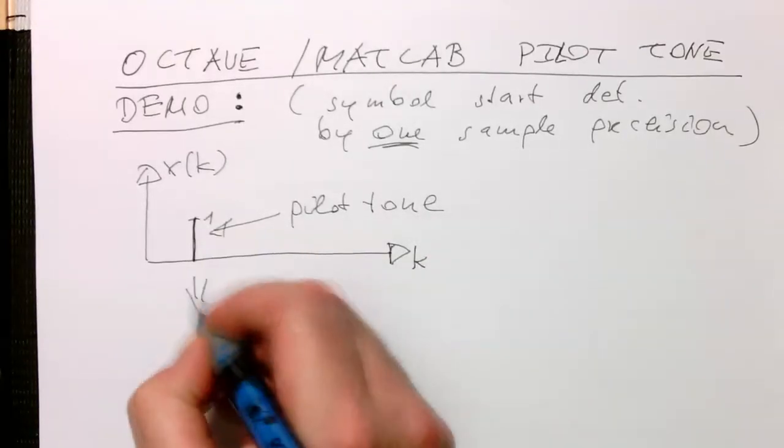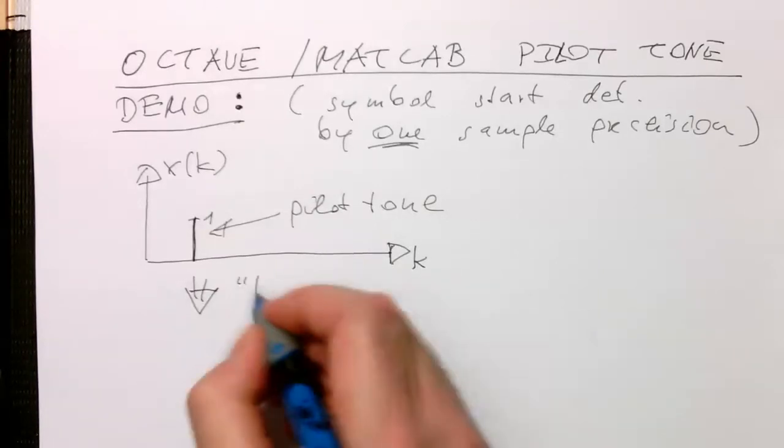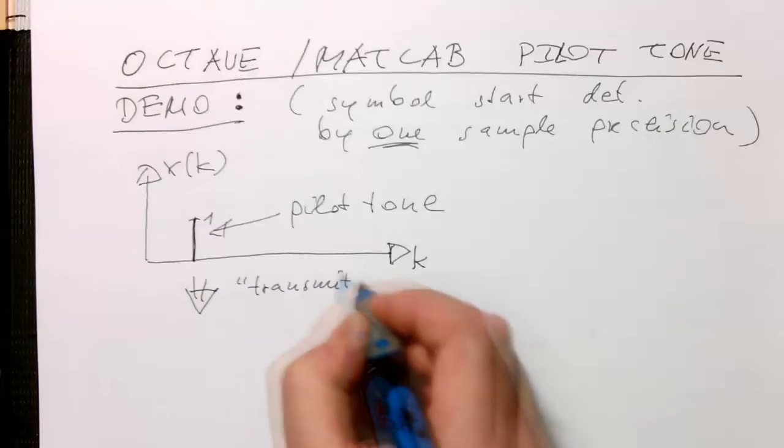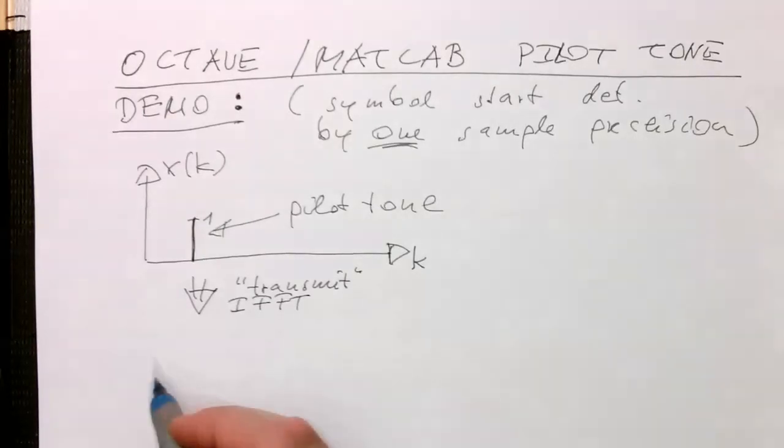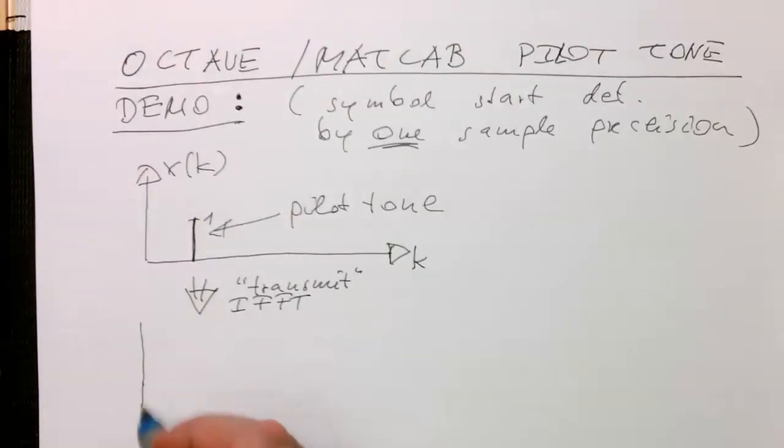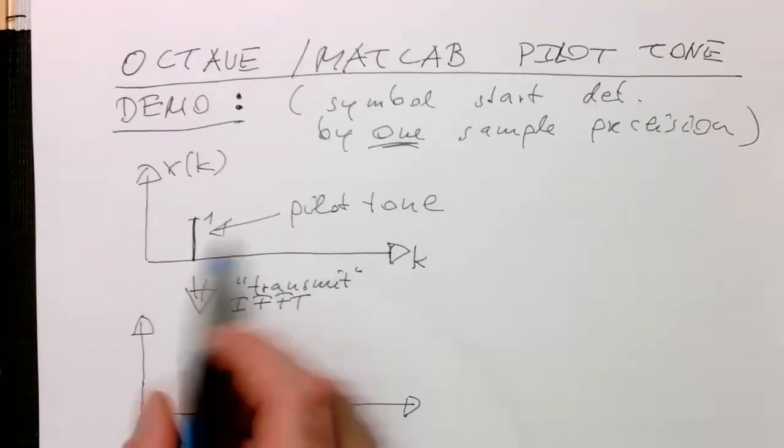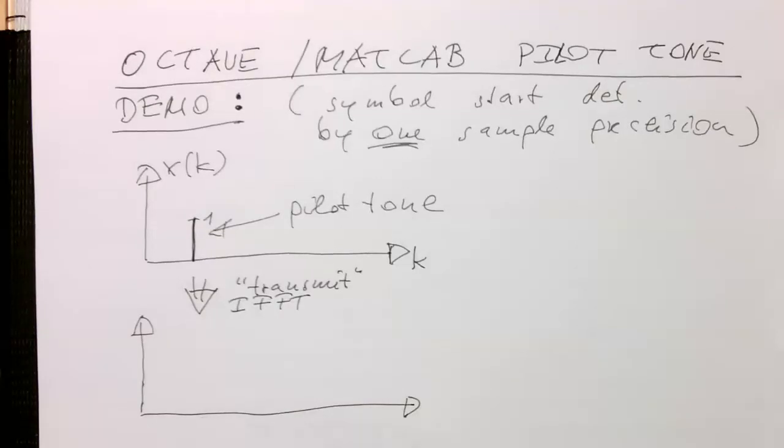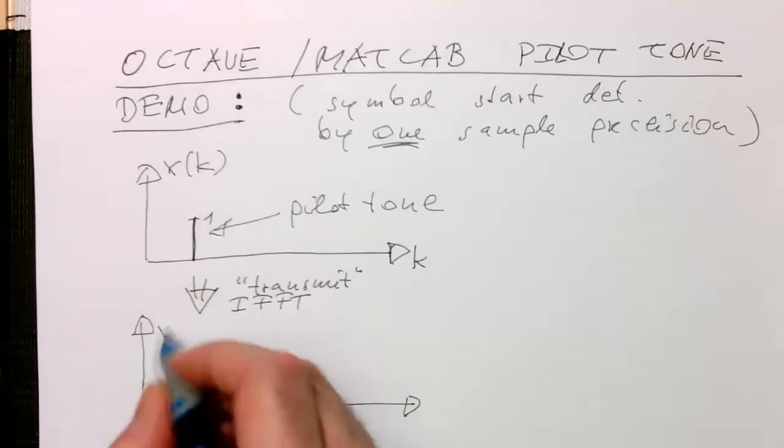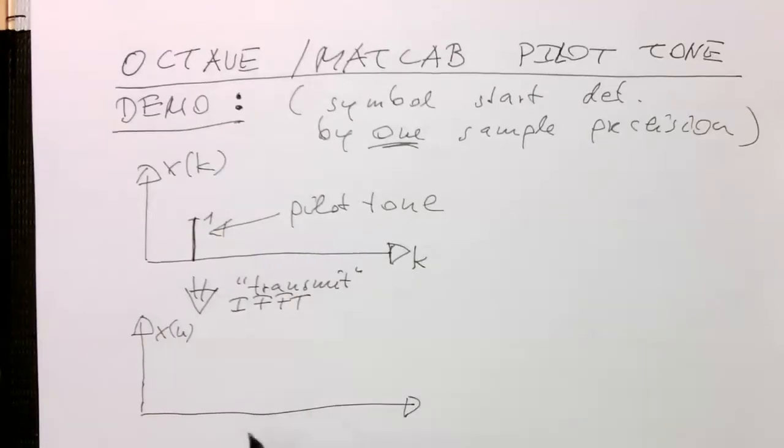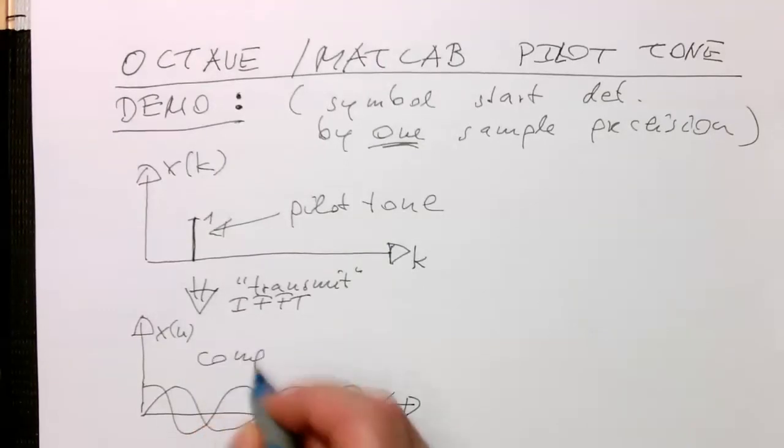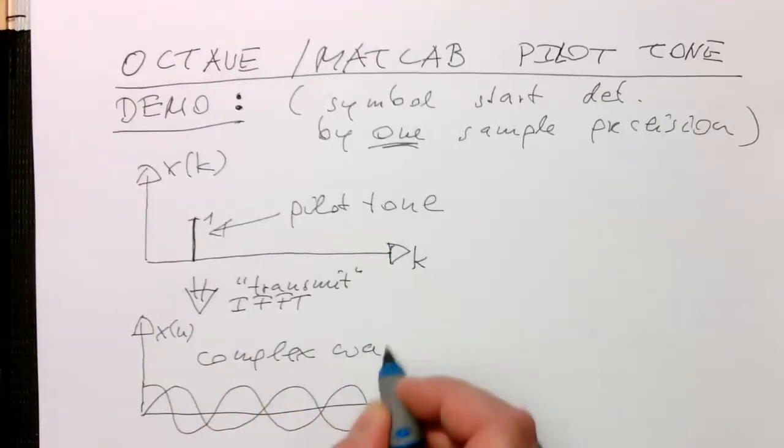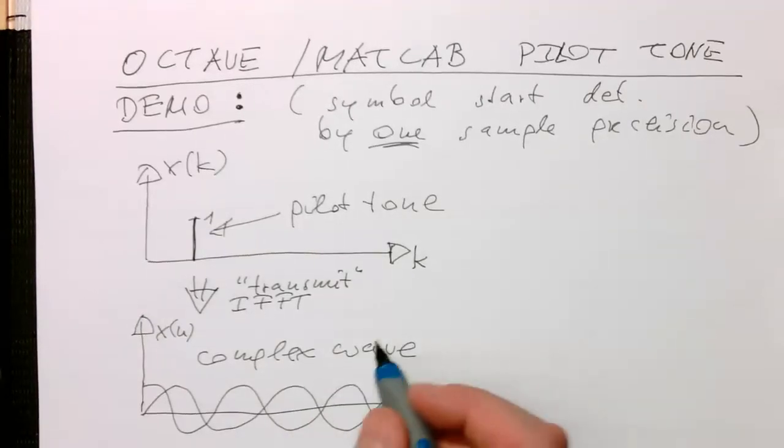So what we do then, we transmit that. This means we're doing the inverse Fourier transform. And the result out of this is, obviously, because it's just one frequency here, the result is a complex sine wave or a sine and cosine wave. So if this is our x of n here, then what we're getting here is something like this. So that's a complex wave. That's obviously what we are expecting.